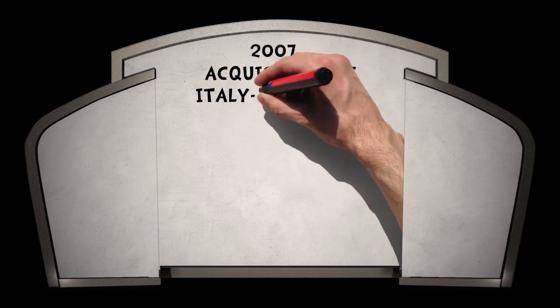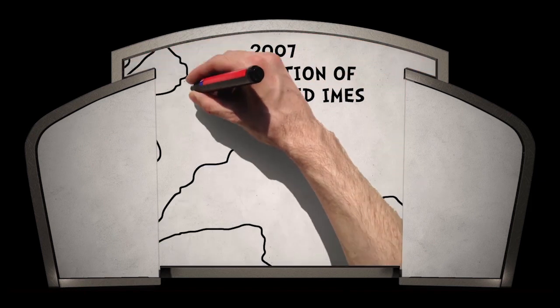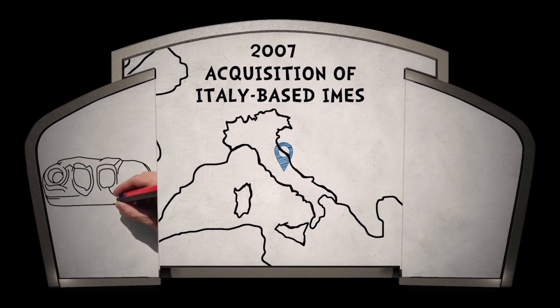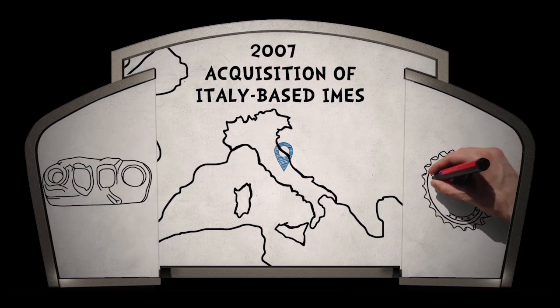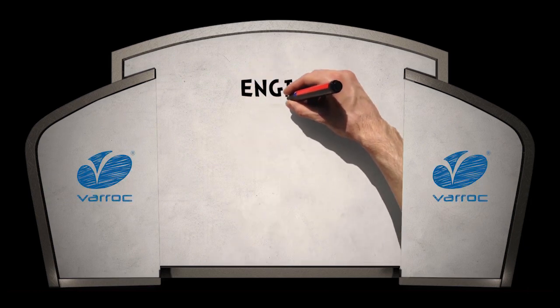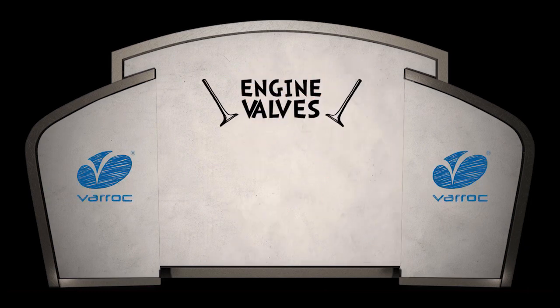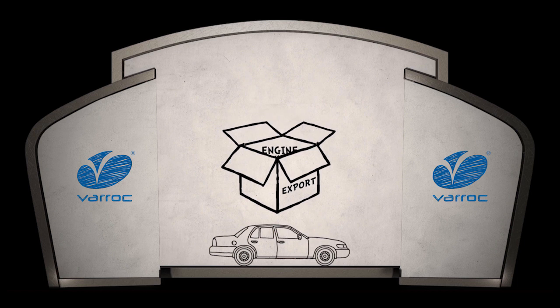2007 saw the acquisition of Italy-based Imus, a diversification into heavy forgings and a de-risking from the Indian market. This decade saw engine valves become the first parts to be exported and also to be supplied to the passenger car segment.